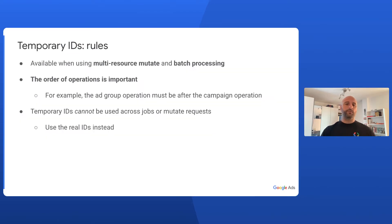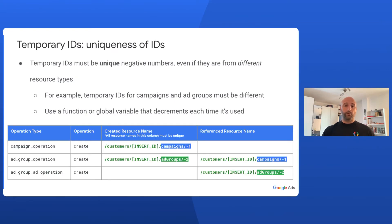There are some caveats to the usage of temporary IDs. First of all, the order of operations is important. If you want to reference another entity being created, the creation needs to be before the referencing operation in your multi-resource mutate, or in your batch job. Besides, you can only use the same temporary ID inside a single API request or job. Once the request completes, you will have the actual ID assigned by the Google Ads API at your disposal, and that is the identifier you should be using. Also, inside a mutate request or a batch job, temporary IDs must be unique. This means that you cannot use minus one as a temporary ID for a campaign and an AdGroup being created in the same mutate operation — they have to differ. Note that our client libraries provide utilities to manage temporary IDs, so that will make your life easier.